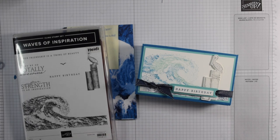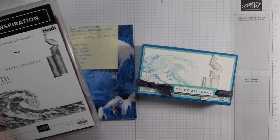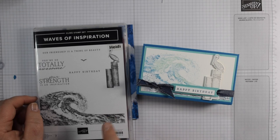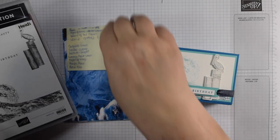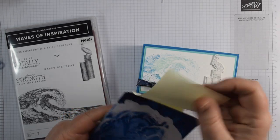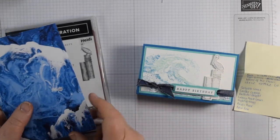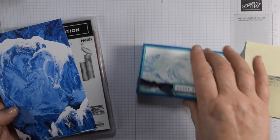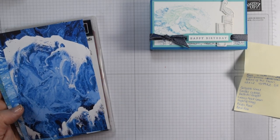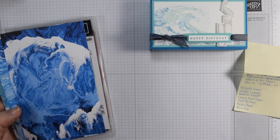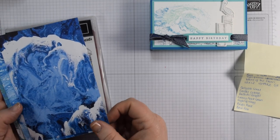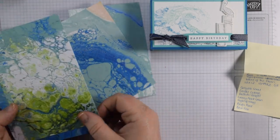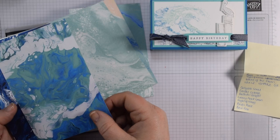Today I'm working with the lovely Waves of Inspiration. This is a stamp set and die set that's an early release from the new catalogue coming out in May, but it also comes with some beautiful papers that are only available while stocks last. The papers are 12 by 12 and they're images of hand poured acrylics. We've got lovely colors and they're all blues and greens.